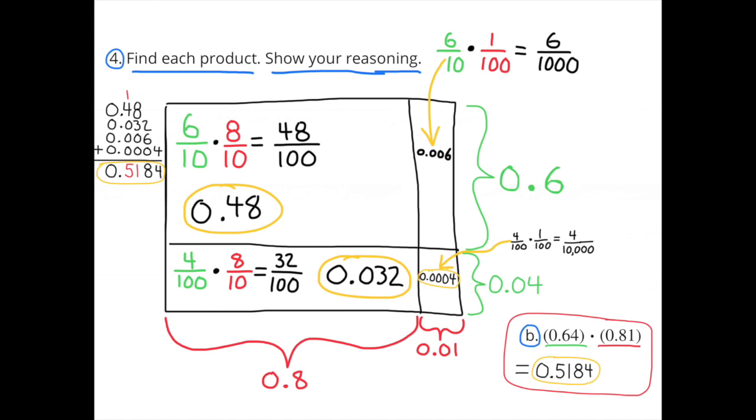B. 0.64 × 0.81. I created a diagram with 4 sub-rectangles. One sub-rectangle has dimensions 0.6 × 0.8. Another sub-rectangle has dimensions 0.6 × 0.01. The third sub-rectangle has dimensions 0.04 × 0.8. And the fourth sub-rectangle has dimensions 0.04 × 0.01.